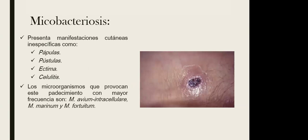La micobacteriosis: los microorganismos más comunes son Mycobacterium intracellulare, marinum y fortuitum. La tuberculosis también se va a presentar con mayor frecuencia en pacientes con VIH. Las manifestaciones cutáneas son pápulas, pústulas y ectima —una lesión ulcerosa necrótica central con halo eritematoso—, similar al impétigo, y puede ocasionar también celulitis.